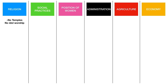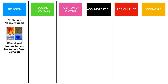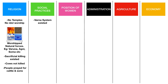Starting with religion, there were no temples found that belonged to that period. Also from texts we know that there was no idol worship. But this does not mean that the people did not believe in God — instead they worshipped natural forces like water, wind, fire, etc. People also killed animals during sacrifices. However, killing of cow was not allowed; it was prohibited. In fact, people prayed to God for sons and cattle.